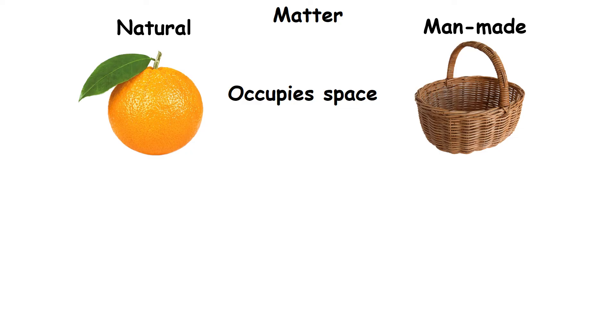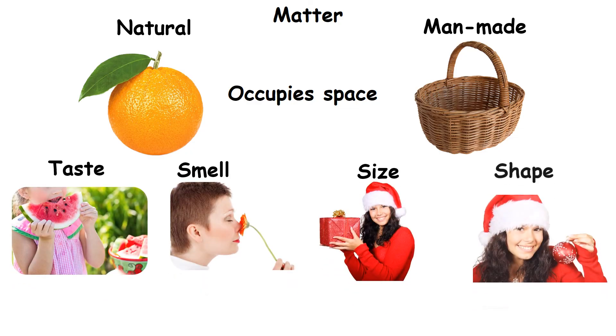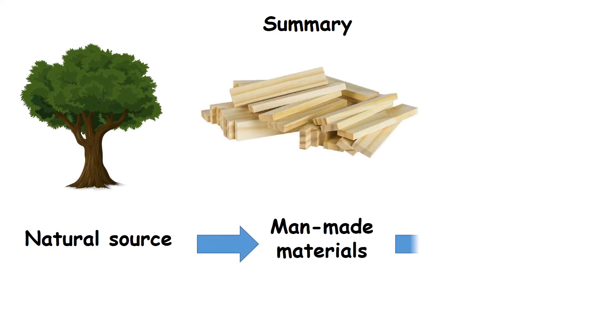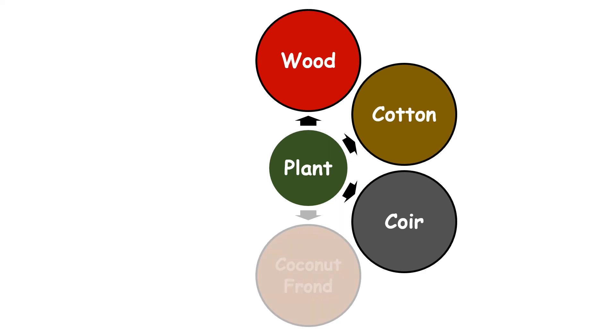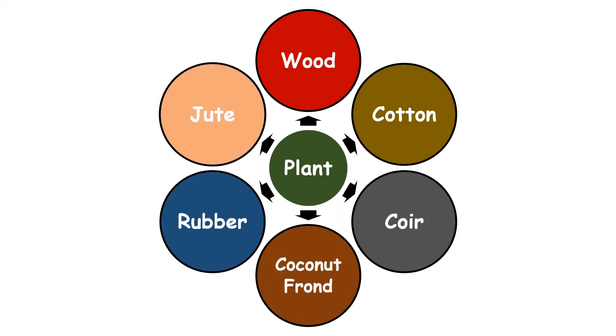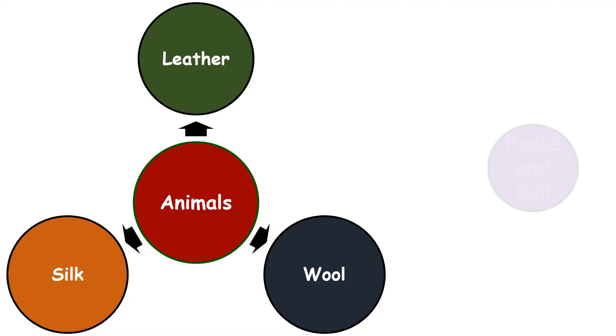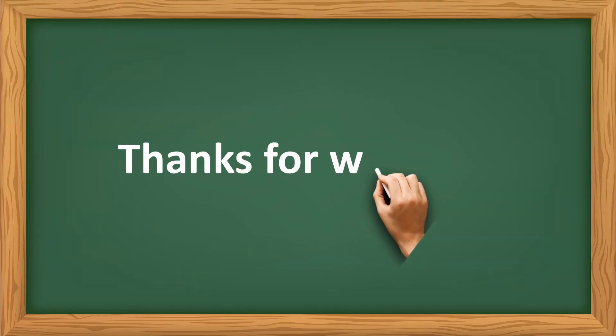Matter. Any natural or man-made things that occupy space is called matter. Matter has properties like taste, smell, size and shape. Thanks for watching.